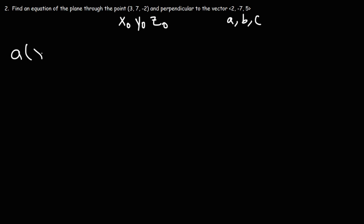So let's write the formula that we're going to use. So it's A times X minus X0, plus B times Y minus Y0, plus C times Z minus Z0. Now, all we need to do is plug in the values that we have. So A is 2, X0 is 3.